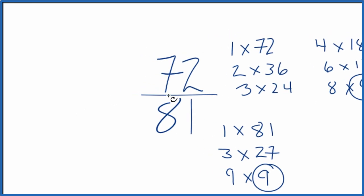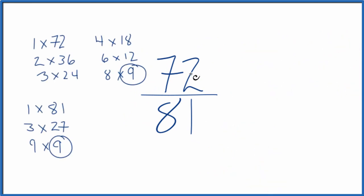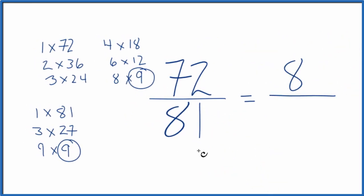Let's move these over here. So 72 divided by 9 gives us 8, and 81 divided by 9 gives us 9. So we end up with 8 ninths, and we can't simplify this any further.